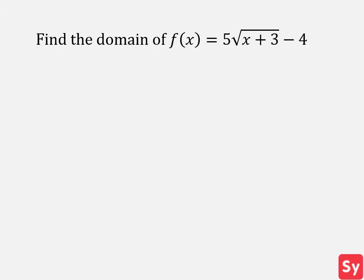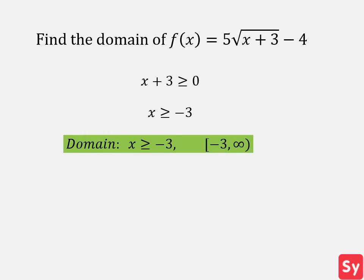Let's see some examples. First example: we want to find the domain of 5 times the square root of x plus 3 minus 4. Since we are finding the domain of a square root, we take the expression in the radical and set it greater than or equal to zero. We can subtract 3 from each side and get our domain: x is greater than or equal to negative 3. And you can find the interval notation beside the inequality.